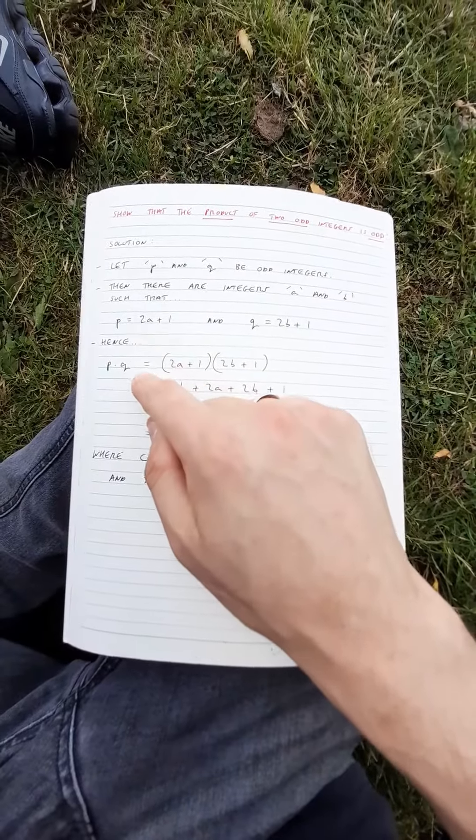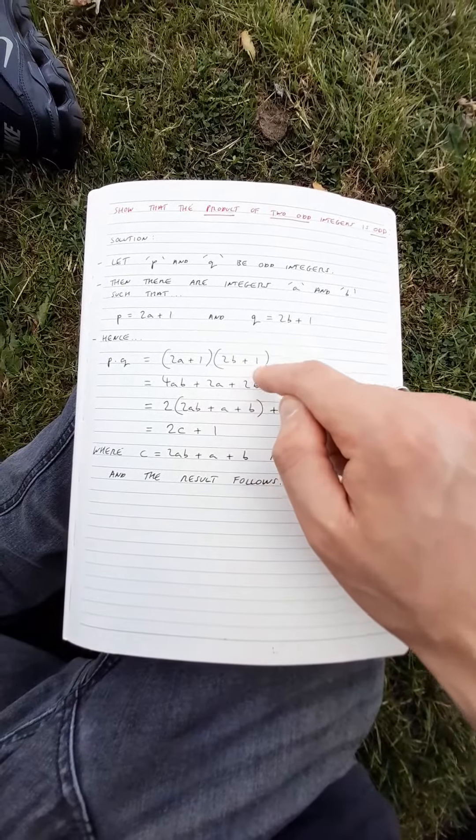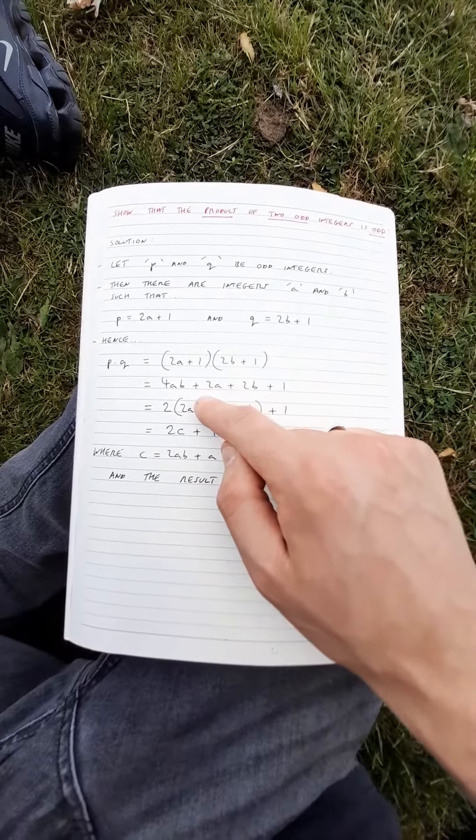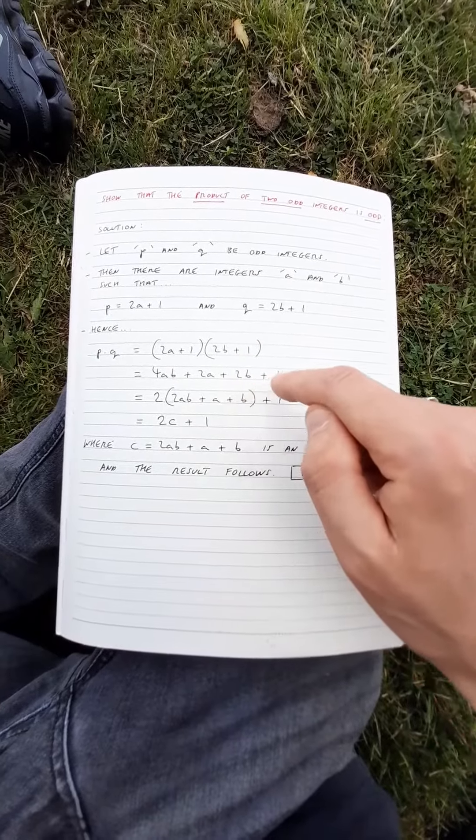Hence, p times q is 2a plus 1 times 2b plus 1. And this gives us 4ab plus 2a plus 2b plus 1.